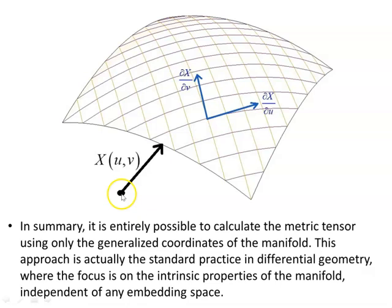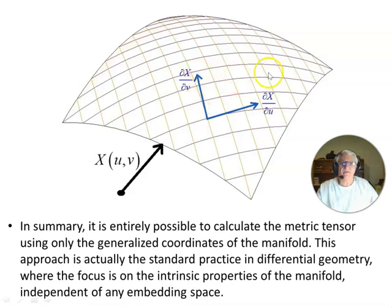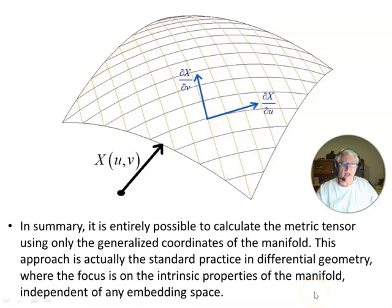To give a picture of that: the position vector generates all the coordinate lines, and to each of these coordinate lines you have tangent vectors ∂X/∂u in one direction and ∂X/∂v in the other — a two-dimensional manifold with the position vectors generating the u and v coordinate lines. In summary, it is entirely possible to calculate the metric tensor using only the generalized coordinates of the manifold, which is the standard practice in differential geometry, focused on intrinsic properties independent of any embedding space.